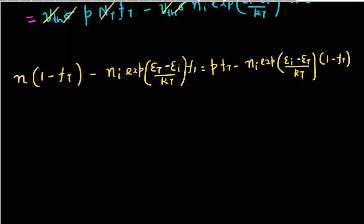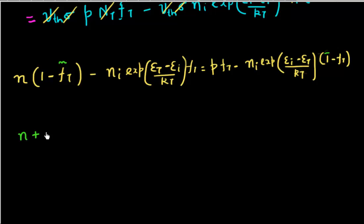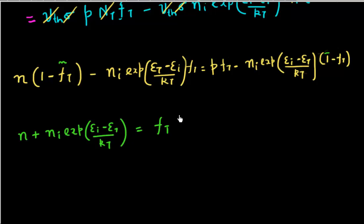I collect all the terms which have Ft on the right-hand side and all the terms which don't have Ft on the left-hand side, with the purpose of deriving an expression for Ft. The only term without Ft is N, and then the Ni·exp((Ei minus Et)/kT) term. Moving it over gives plus Ni·exp((Ei minus Et)/kT). Taking Ft common among all terms that have Ft gives Ft times (N plus P plus Ni·exp((Et minus Ei)/kT) plus Ni·exp((Ei minus Et)/kT)).